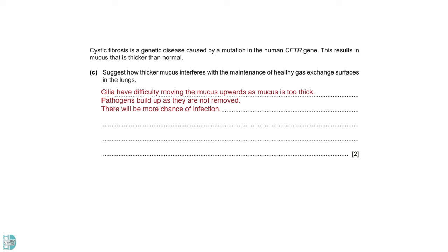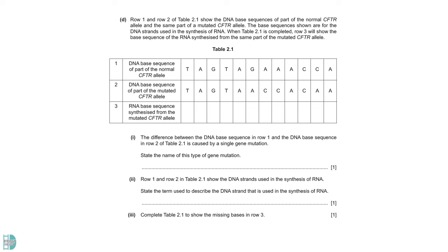In D, we have the DNA base sequences of the normal and mutated CFTR alleles. The first question wants you to state the name of this type of gene mutation. The mutated allele has 3 nucleotides missing. So, this is deletion. The term used to describe the DNA strand used in RNA synthesis is the transcribed strand. You can also call it the template strand.